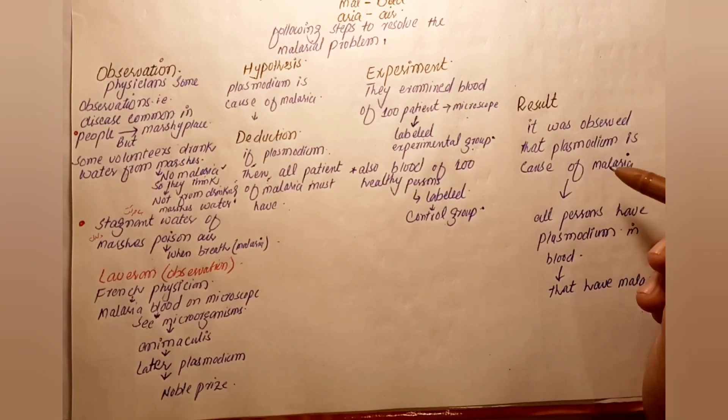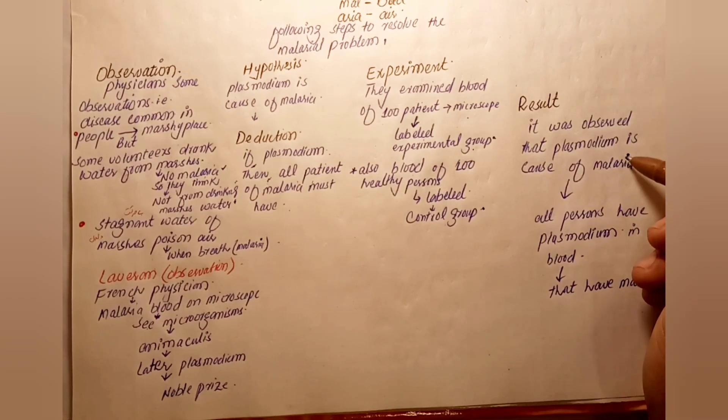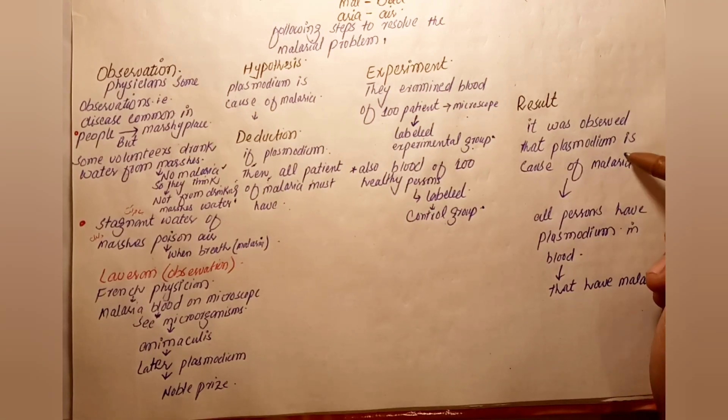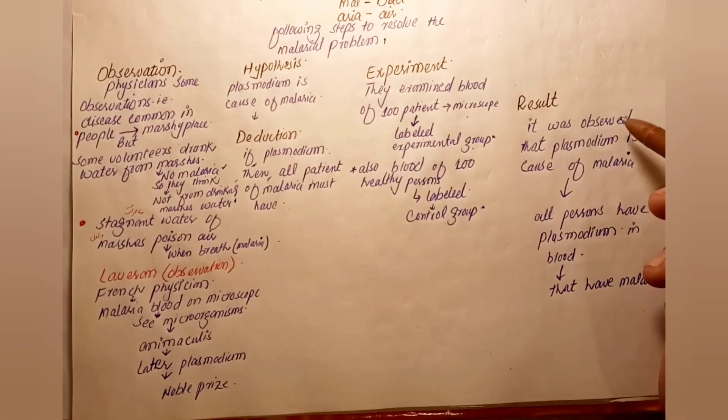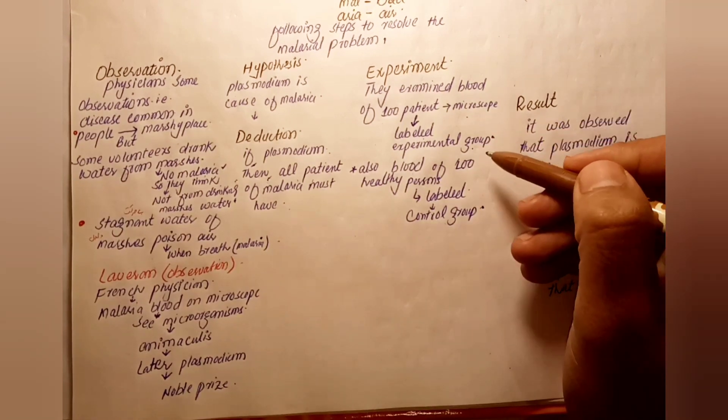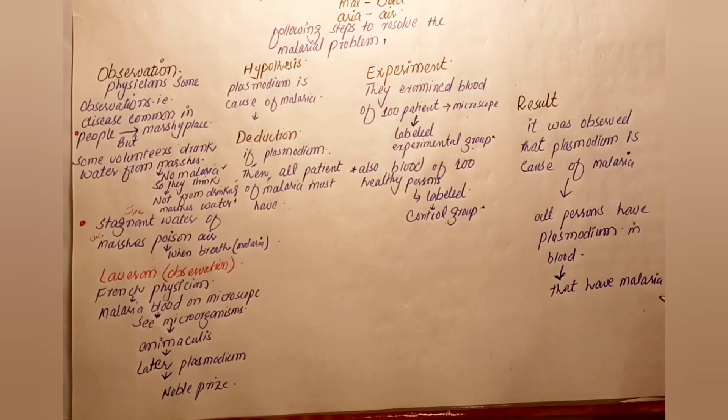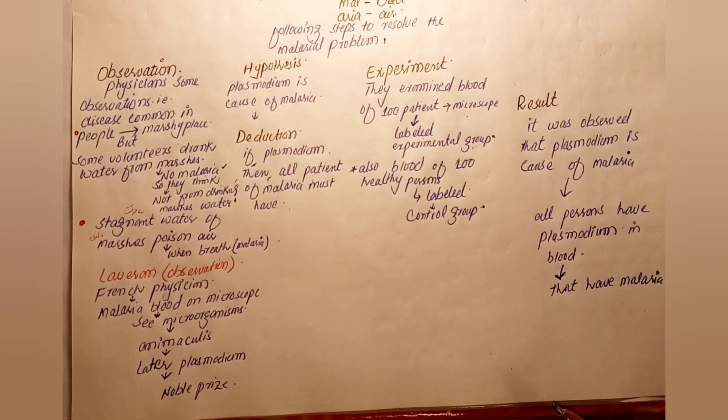The conclusion was clear: Plasmodium in the blood causes malaria. All patients with malaria had Plasmodium in their blood. The experimental group demonstrated this connection - when Plasmodium is present in blood, malaria occurs. This confirmed the hypothesis.